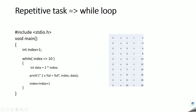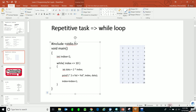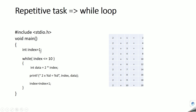Then index = index + 1, so index becomes 2. Control comes back to the condition: 2 <= 10 is true, so the loop executes again and prints '2 x 2 = 4'. The index keeps incrementing to 3, 4, 5, and so on, printing each line until index becomes 11. At that point, 11 <= 10 is false, so the loop exits.